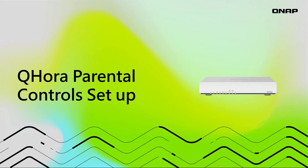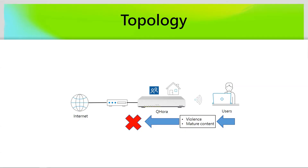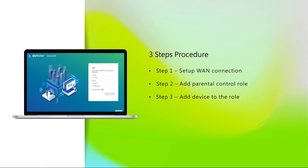Next is our Qhoras Parental Control setup. In our topology, we set up a Qhoras with one connection and a client connected to it. We will enable Parental Control features and verify if the client added to the Parental Control role gets restricted from accessing certain websites. The setup process is quite easy — there are only three steps. Step 1: Set up the Qhoras WAN connection.